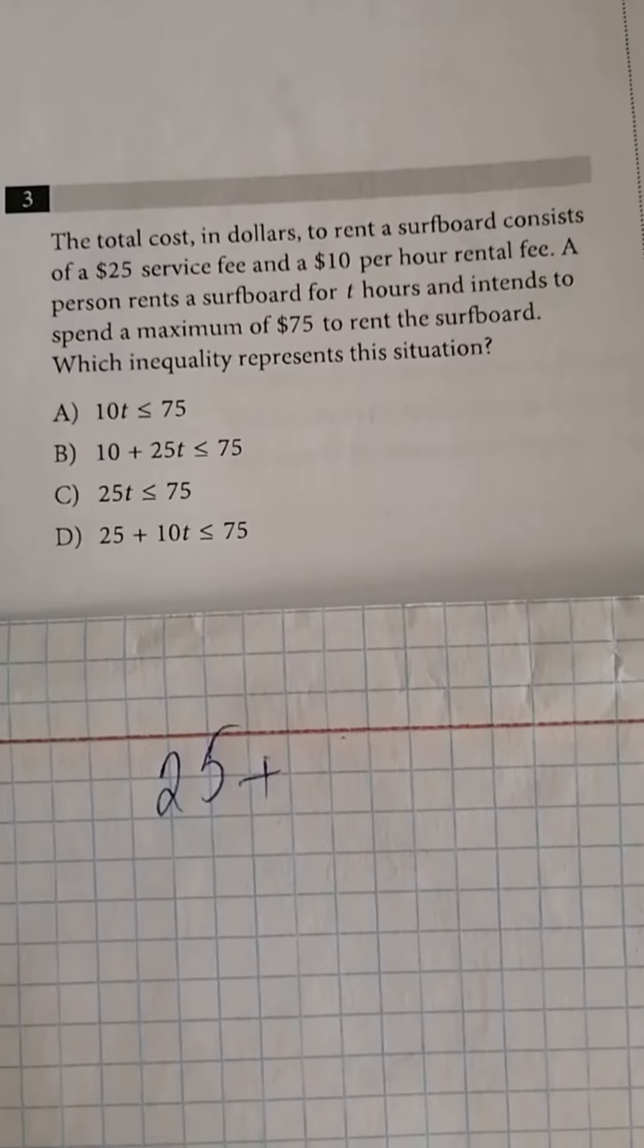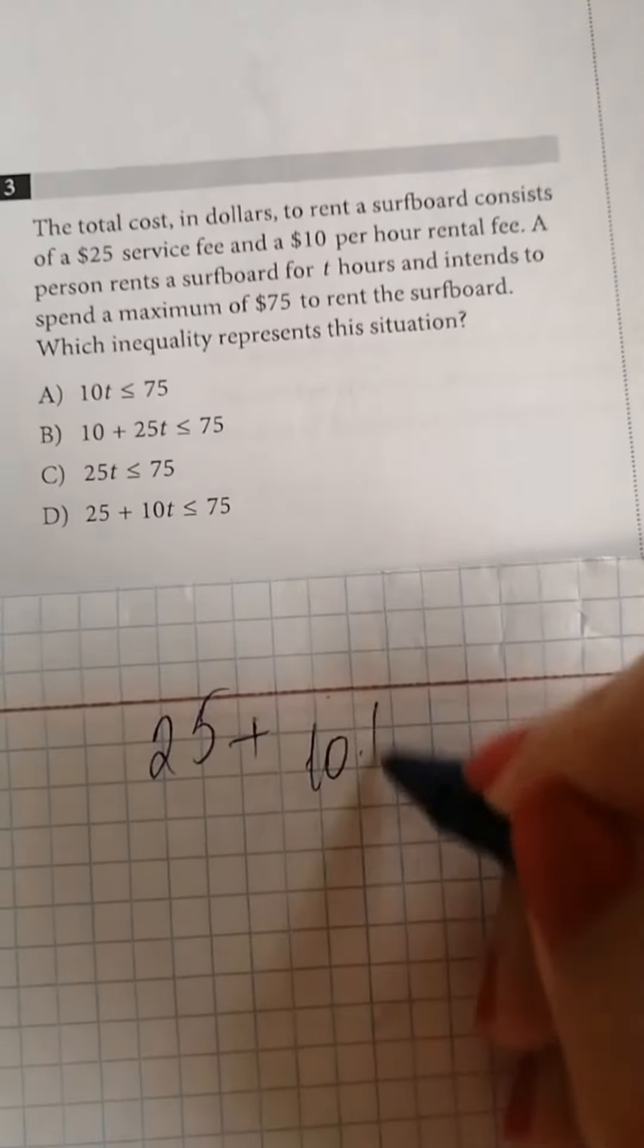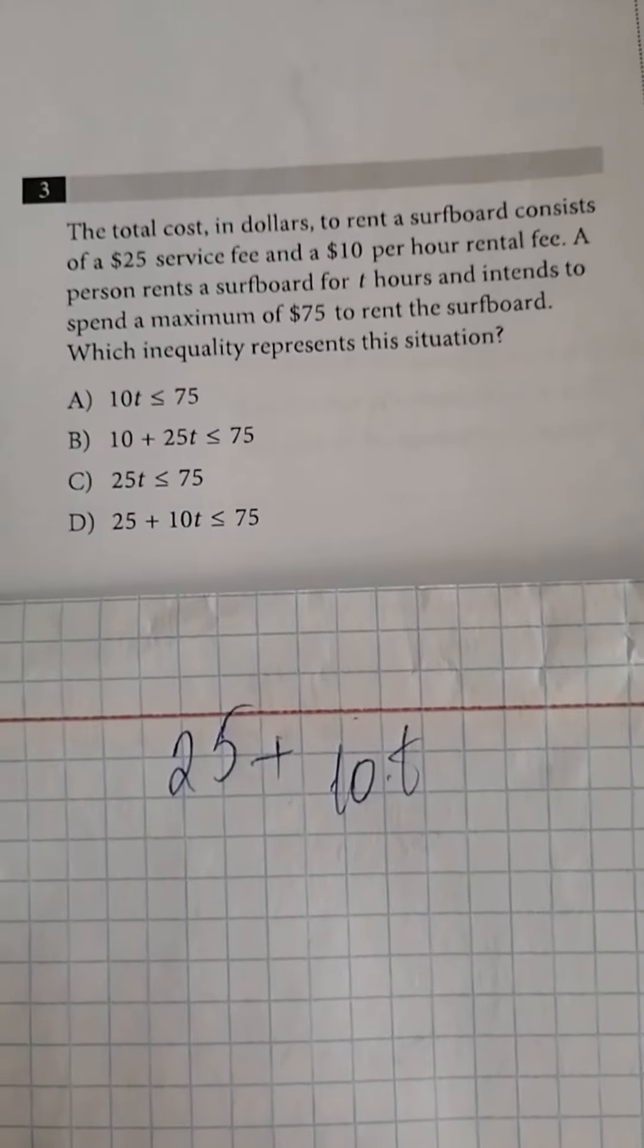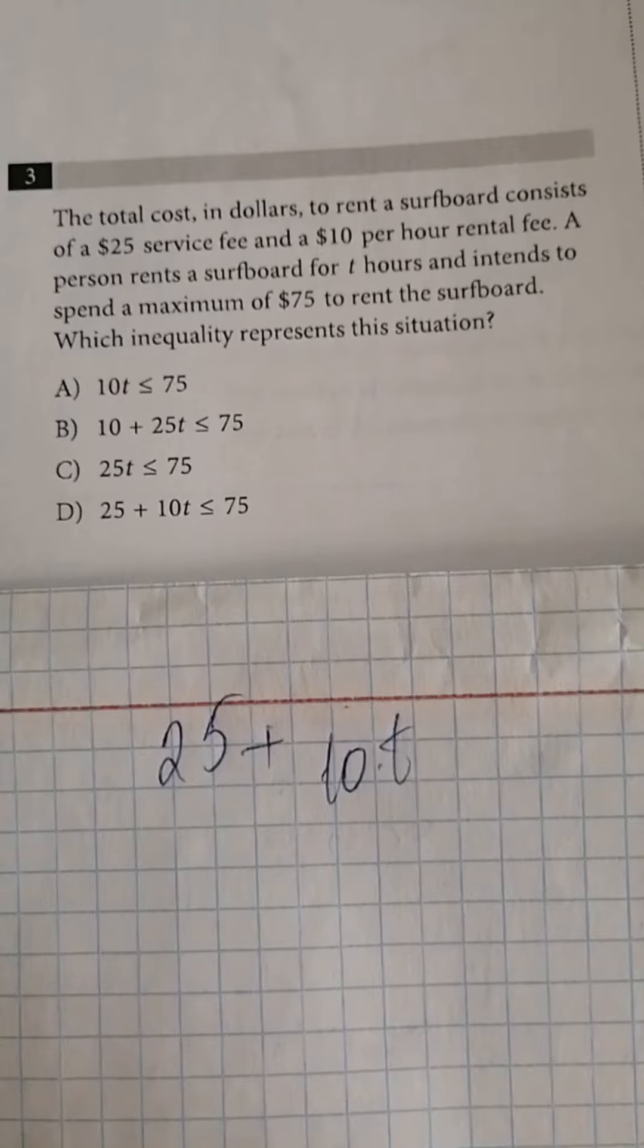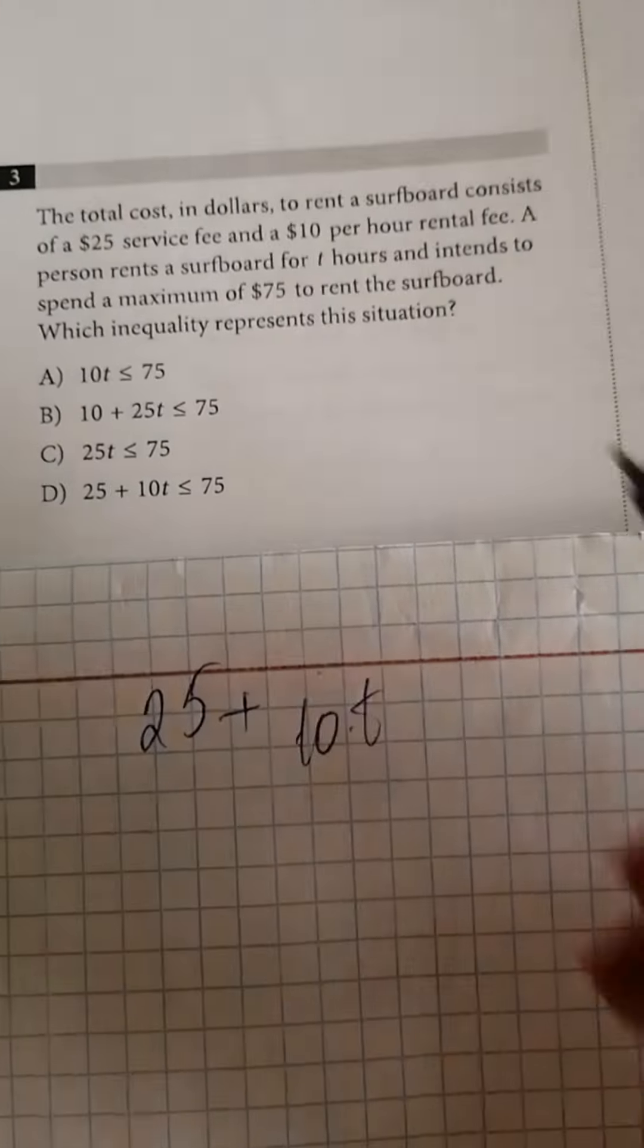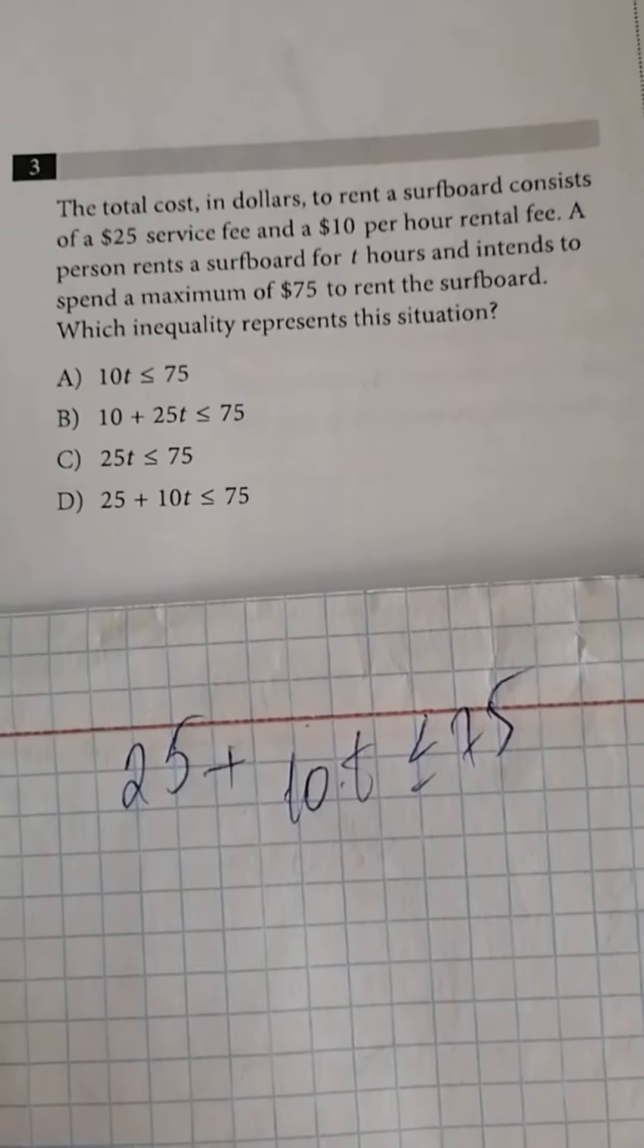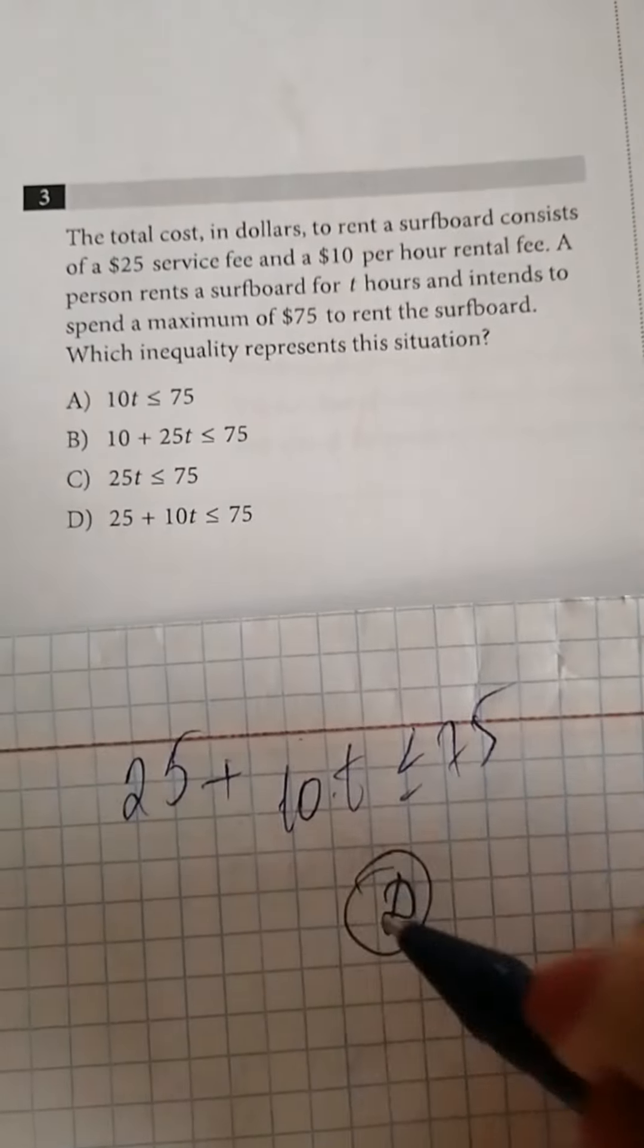then it means there's an extra fee of 10 times T. The question asks which inequality represents the situation. In the case that the person has to spend a maximum of $75, then it has to be less than or equal to 75. And the answer is D. Thank you.